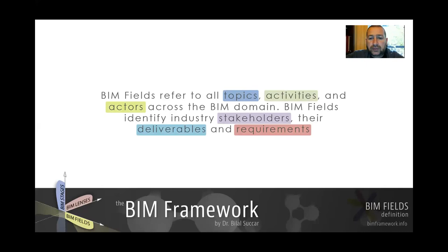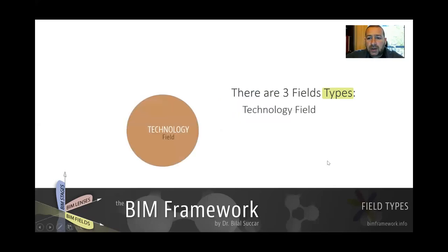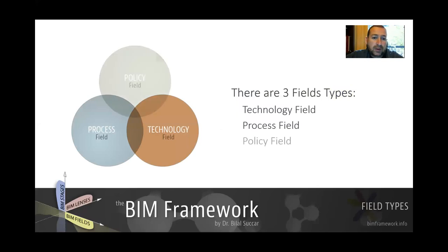BIM fields represents all these stakeholders, and the way it's represented is through a specific Venn diagram which includes types and components. We've got three field types: the technology field, which overlaps with a process field, which in turn overlaps with the policy field.